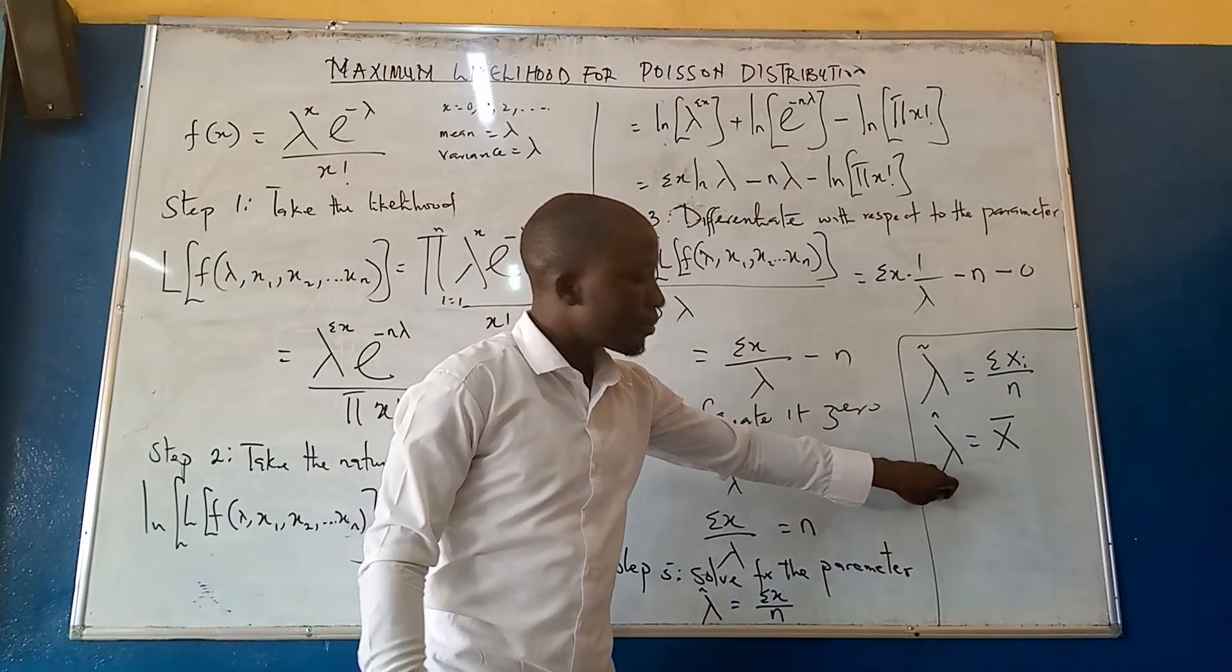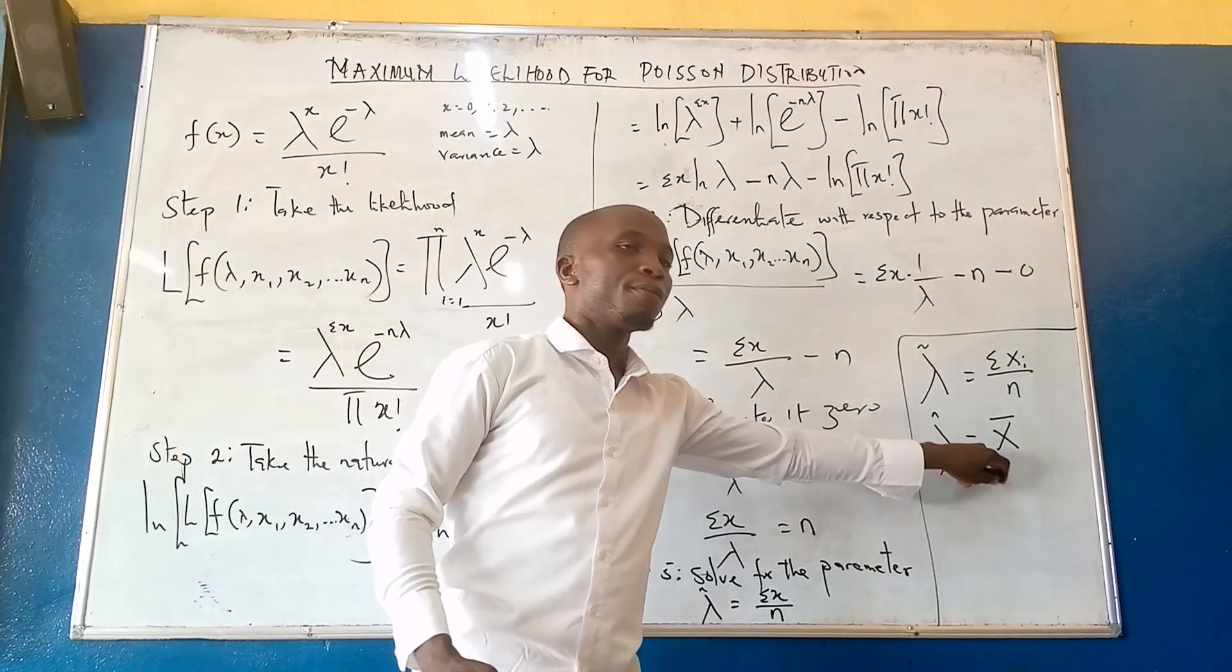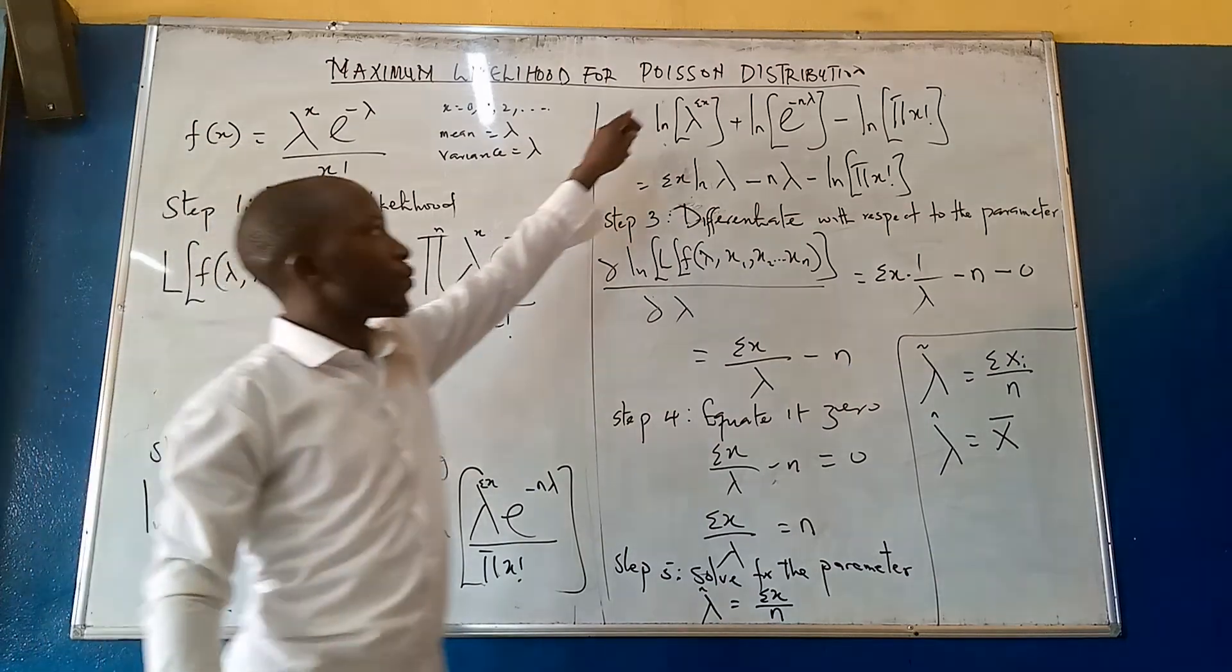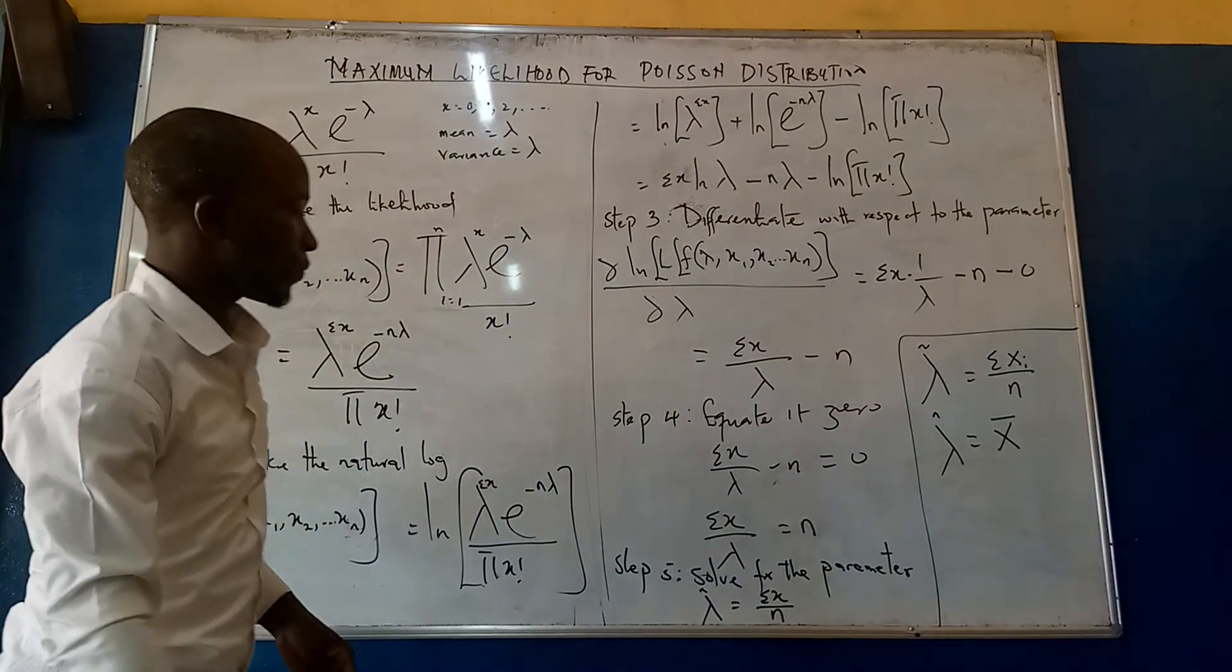And this lambda will stand for mean. And we should not forget that lambda also stands for variance when it comes to Poisson distribution. Thank you for watching.